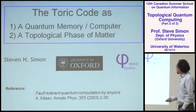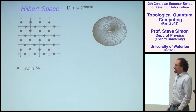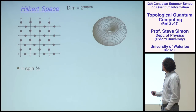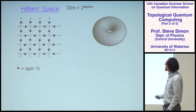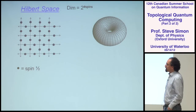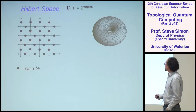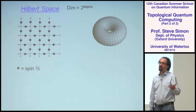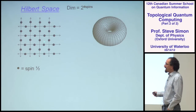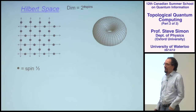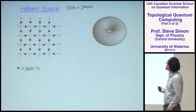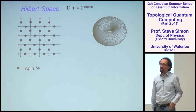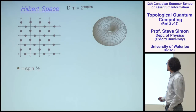So without further ado, here's the model. We're going to start with a square lattice, and I'm going to put a spin one-half, or a qubit, on every edge of the square lattice. The dimension of the Hilbert space is 2 to the number of spins we have in the problem.